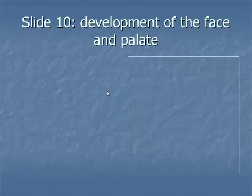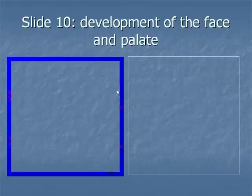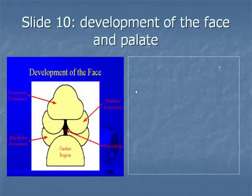Slide 10: the development of the face and palate. Item 1: the recognizable face begins its development from five primordia that surround a central area of depression, the oral pit or the stomatodium. These primordia are a single cranially located frontal nasal process and two bilaterally located maxillary processes and mandibular processes.